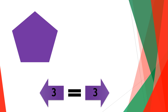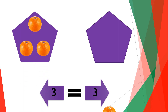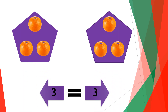If you put three oranges on one side and three oranges on the other side — one, two, three and one, two, three — this means that three oranges equals three oranges, so that clearly shows that three is equal to three.